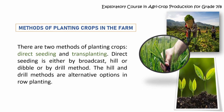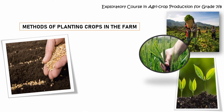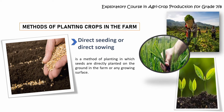There are two methods of planting crops: direct seeding and transplanting. For direct seeding, it is either by broadcast, hill, or dibble, or by drill method. The hill and drill methods are alternative options in row planting. Direct seeding, or direct sowing, is a method of planting in which seeds are directly planted on the ground, in the farm, or any growing surface.